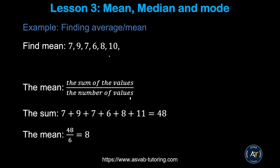The first thing we learn here is how to find Average or Mean. Average or Mean are the same thing. If you want to find the Mean or Average, you have to add the numbers. You could see there are a few random numbers: 7, 9, 7, 6, 8, and 10. You have to add the numbers and then divide by the count. When you add them up, that gives you 48. If you divide that by 6, that gives you 8. So the correct answer is 8.